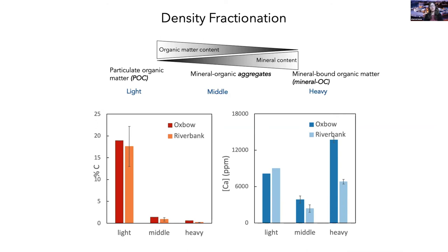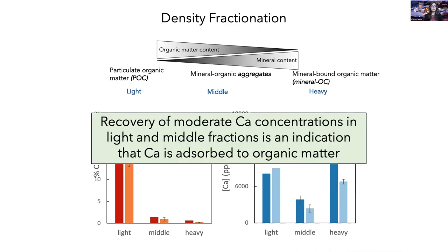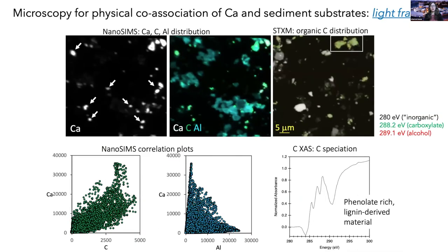I looked at the carbon and the calcium content for these different density fractions for my two different sediments. Not surprisingly, the carbon content was highest in the light fraction and lowest in the heavy fraction. The calcium content is distributed across all fractions. This led me to think that the recovery of calcium in the light and middle fractions is an indicator that calcium could be adsorbed to organic matter — particularly in the light fraction because it is so abundant in carbon. To test this idea, I wanted to use microscopy to probe whether calcium was actually physically co-located with carbon.